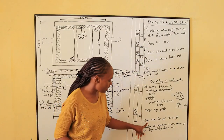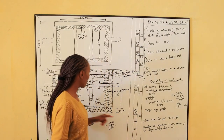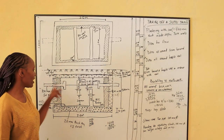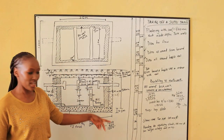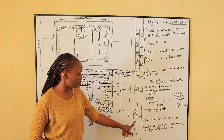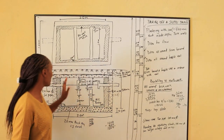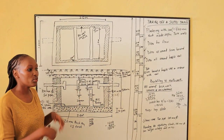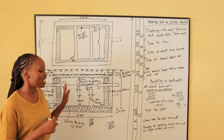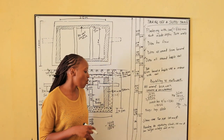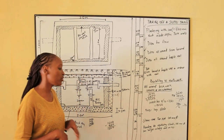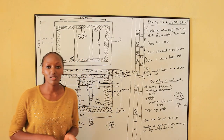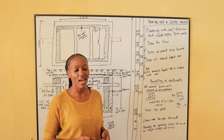Then we shall need to take off the T-pipes — they look like the letter T. There are 2 of them. Then we need a ventilating shaft that will ventilate the septic tank, which is 1 number, 3 meters long. So that brings us to the end of taking off the septic tank.